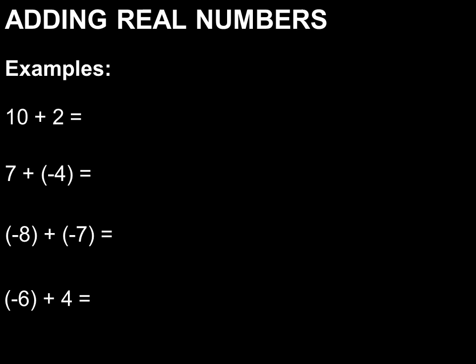Let's take these examples. 10 plus 2 is equal to 12. 7 plus negative 4 also translates to 7 minus 4, therefore the answer will be 3. Negative 8 plus negative 7 is equal to negative 15, and negative 6 plus 4 is equal to negative 2.